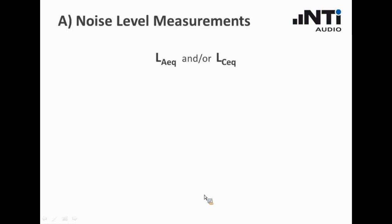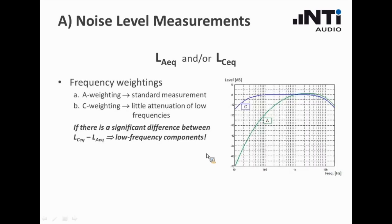Let us start with part one, the noise level measurement. These are typically executed as A or C weighted equivalent sound level. These are averaged values over a longer period of time and they give a very good reference for the background noise in a room. We have two possible weightings: the A weighted, which would be the standard weighting representing the human hearing perception, or the C weighting, which has the advantage that it has a lower attenuation of the low frequencies.